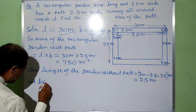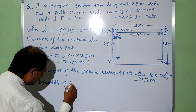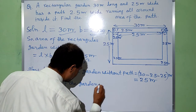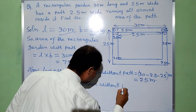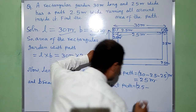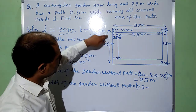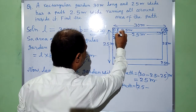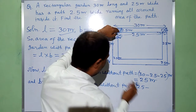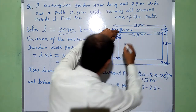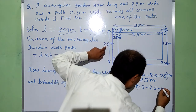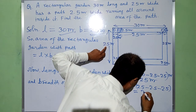And the breadth of the garden without path: total breadth is 25m. This part will be subtracted — 25 minus 2.5. This width will also be subtracted from 25, minus 2.5. Now we have only 20m.